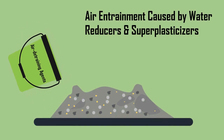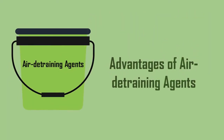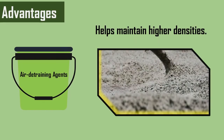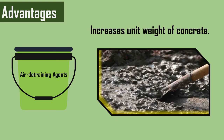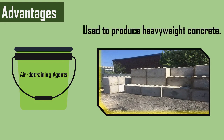These agents can also be used to counteract the air entrainment caused by water reducers and superplasticizers. Some other advantages of air detraining agents are that they help maintain higher densities, increase the unit weight of concrete, and are used to produce heavy weight concrete.